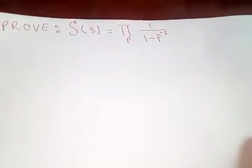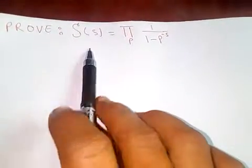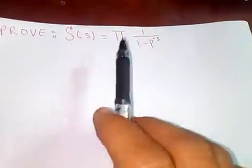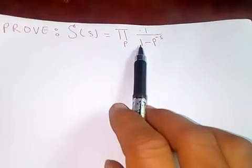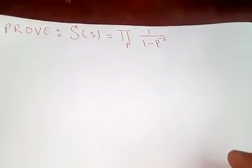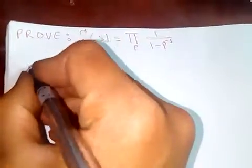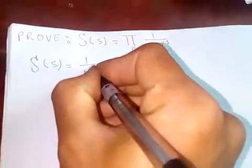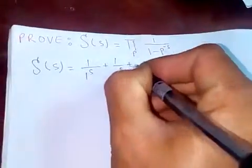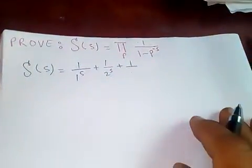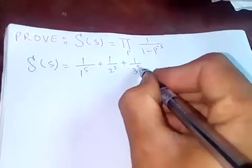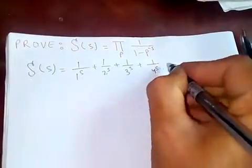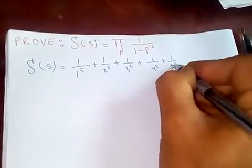Thanks for watching my video. Today I'm going to show the Riemann zeta function and prime numbers. This was first proved by Euler. The Riemann zeta function is 1 over 1s plus 1 over 2s plus 1 over 3s plus 1 over 4s plus 1 over 5s, and so on.